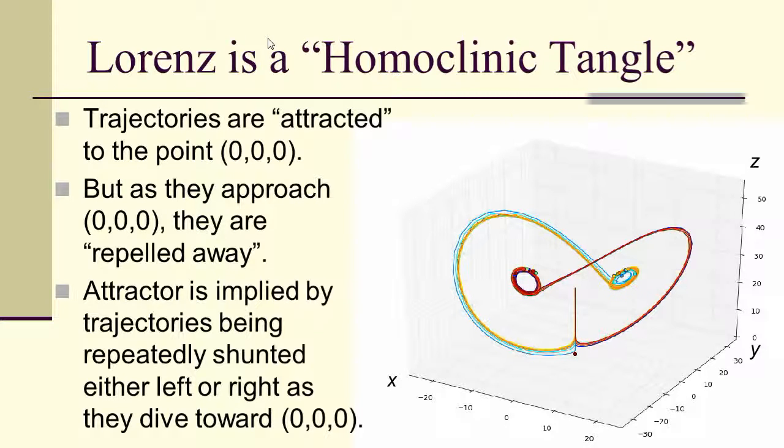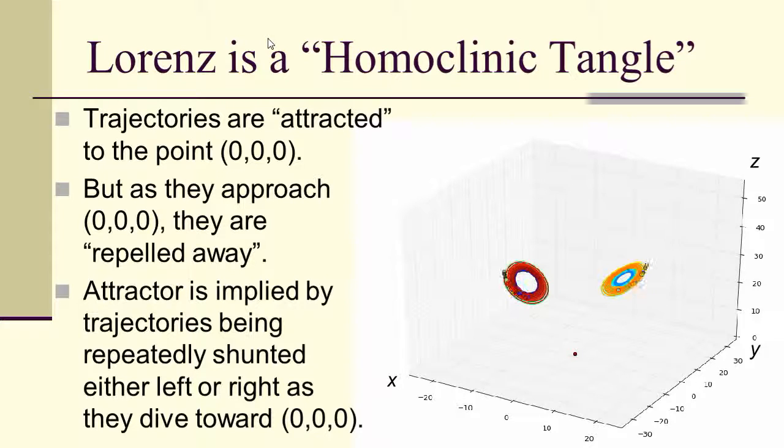So this is the sensitive dependence on initial conditions because as they dive down, they're going to go right or left. Notice once they've decided if they're going to go right or left, that they really are fairly predictable. So you've got this spiraling out from an unstable equilibrium on the right and a spiraling out from an unstable equilibrium on the left.